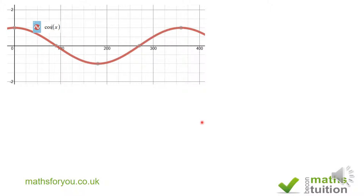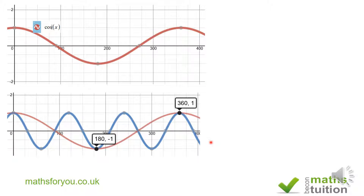Next I sketch the graph of cos(3x), which goes from zero to 360 in three cycles. The brown graph is cos x and the blue graph is cos(3x). From zero to 360, cos(3x) completes cycle one, cycle two, and cycle three. That's cos(3x).